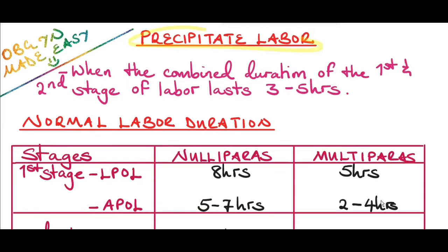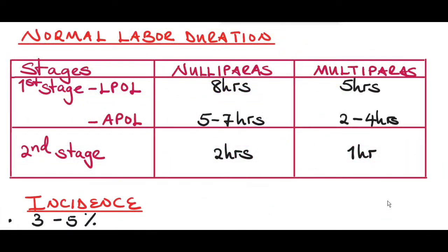So what is precipitate labor? Precipitate labor is when the combined duration of the first and second stage of labor lasts for about three hours. Even up to five hours is considered a precipitate labor.